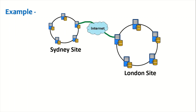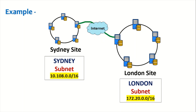For example, we have two sites — Sydney site and London site — and every site has its own subnet. The Sydney site subnet is 10.10.0.0/16 and the London site subnet is 172.20.0.0/16. Every site will have its own unique subnet.